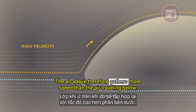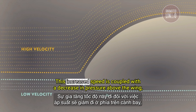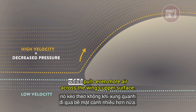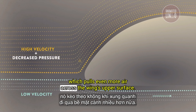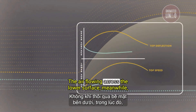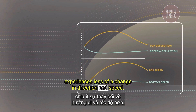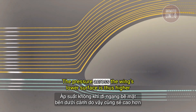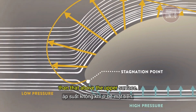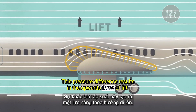The air above therefore gathers more speed than the air traveling below. This increased speed is coupled with a decrease in pressure above the wing, which pulls even more air across the wing's upper surface. The air flowing across the lower surface, meanwhile, experiences less of a change in direction and speed. The pressure across the wing's lower surface is thus higher than that above the upper surface.